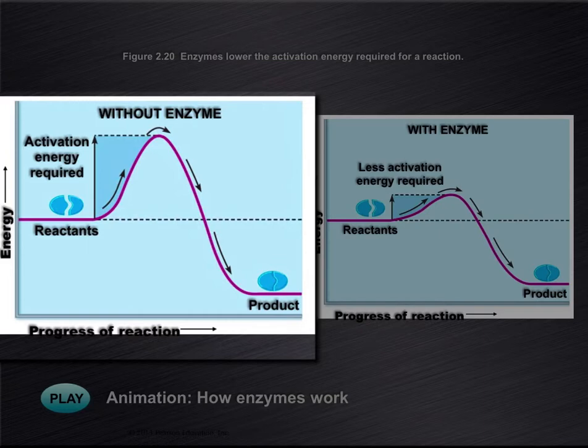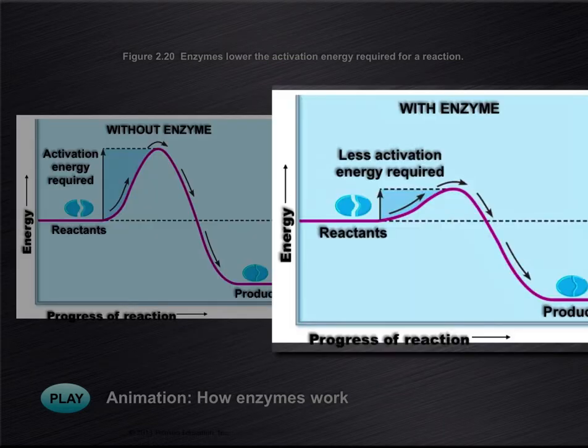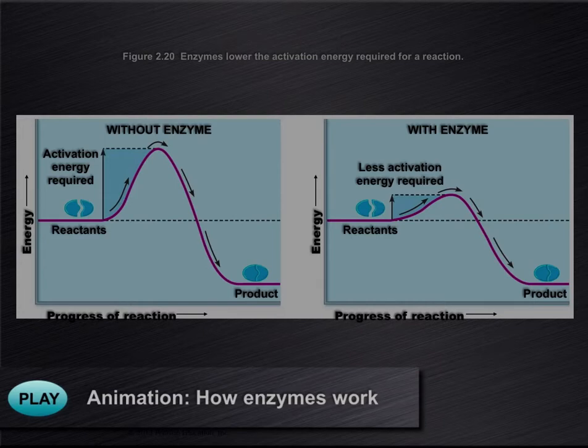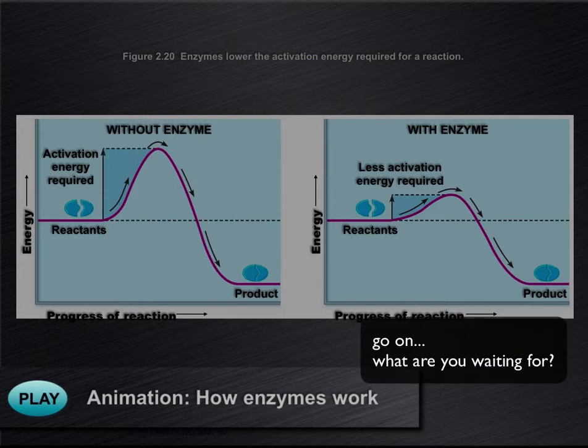If we do not have an enzyme, it actually requires quite a bit of energy to make this reaction happen. On the other hand, look at the right side. We require much less energy if an enzyme is around. So enzymes speed reactions up and reduce the amount of energy required. And yes, you figured it out. I'm going to pause and send you over to watch the animation, how enzymes work in the study area on mastering. So you go ahead. I'll wait here. And I'll be here whenever you get back.